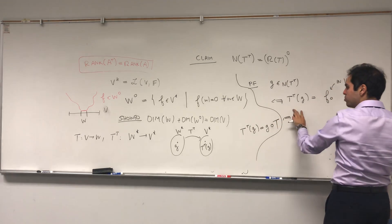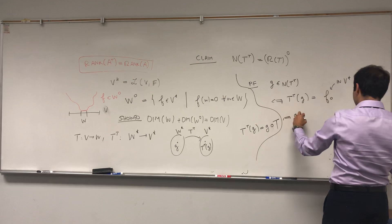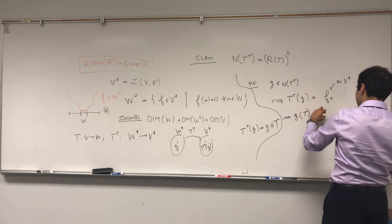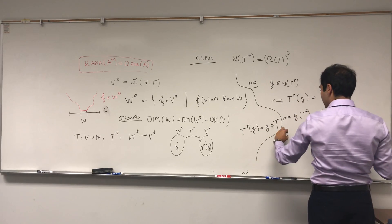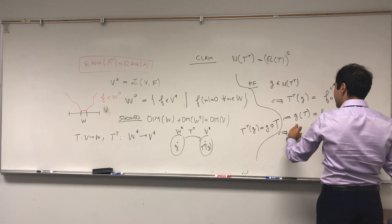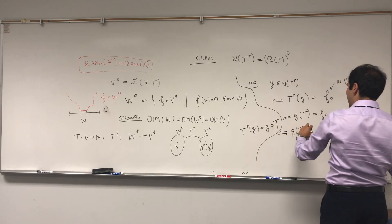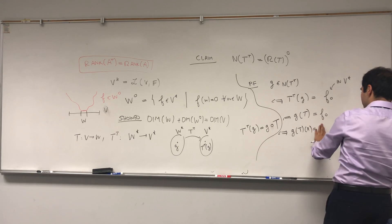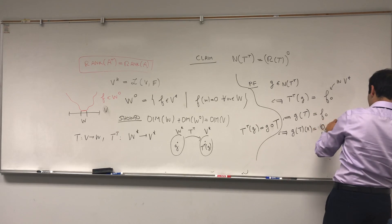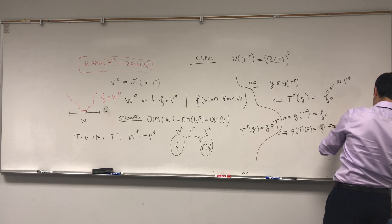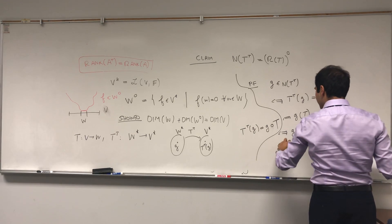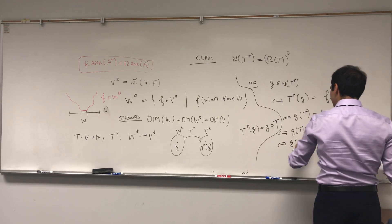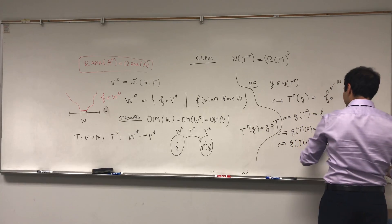But what is T transpose of G? You just flip it. So you know that G of T equals to the zero functional, which is the same thing as saying that G of T of X equals to zero for every X.